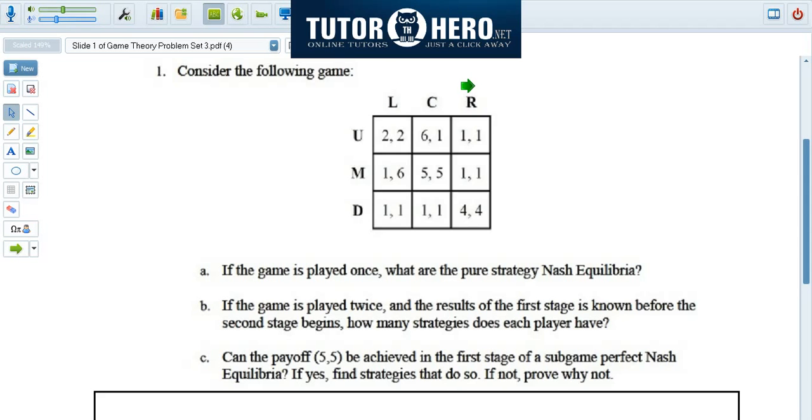Each player is going to undertake their action simultaneously without knowledge of what the other person is doing. The row player will choose a row, and the column player will choose a column, without knowing what the other player is doing. Nevertheless, in equilibrium, they must correctly predict the actions of the other player.